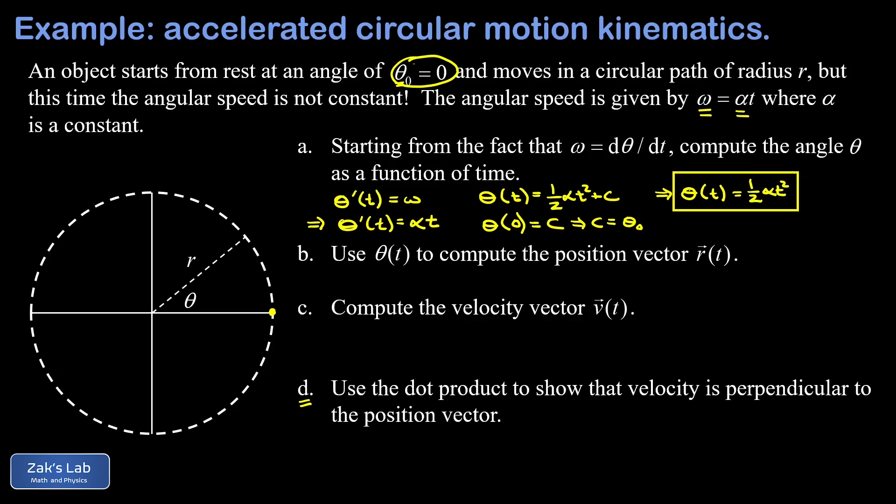In part b, we're asked to use this angle theta as a function of time to compute the position vector r of t. And the expectation there is to write the position vector in the i hat j hat notation. This question is specifically meant to connect to our derivation of the equations of motion for uniform circular motion.